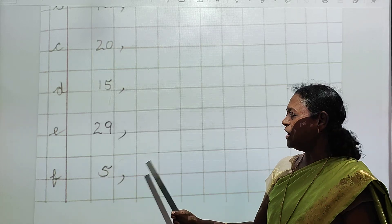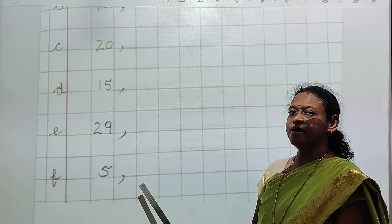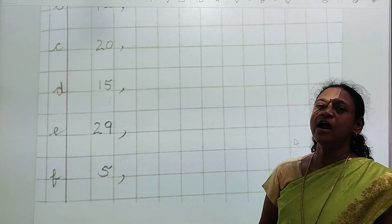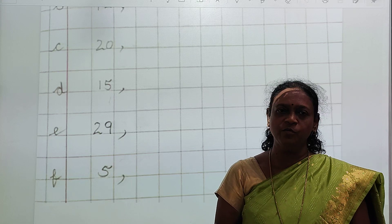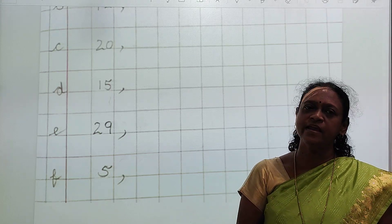5, comma. 5 ke baad kya hai? 6. Yes. In this way you have to write after numbers in your notebook. Okay children? Thank you.